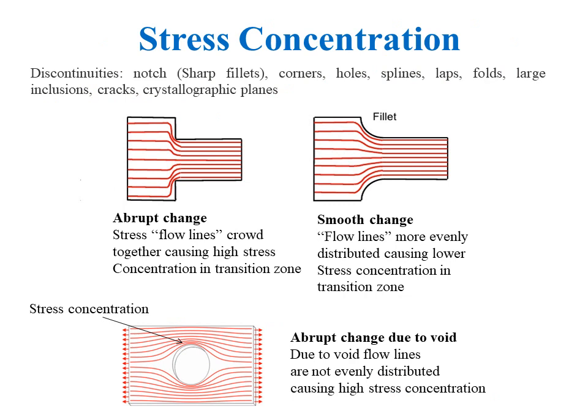The main reason for brittle fracture is stress concentration present in the structure of a molded or manufactured product. Discontinuities that develop during molding or service can also initiate brittle fracture. These discontinuities can be in the form of notches, corners, holes, laps, folds, large inclusions, cracks, etc. — all of these lead to brittle failure.